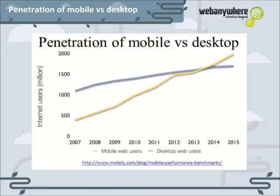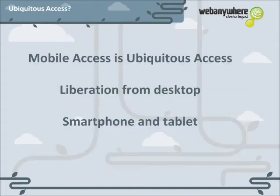As you can see from the chart, forecasts for mobile device internet usage are passing desktop access and will continue to grow as more people switch to or complement their PC with a mobile device such as a smartphone or tablet.